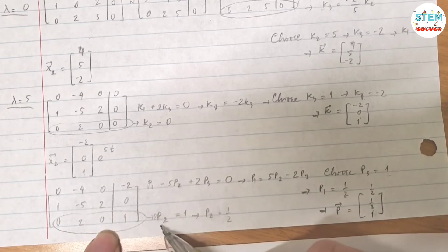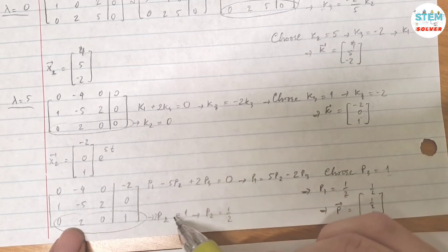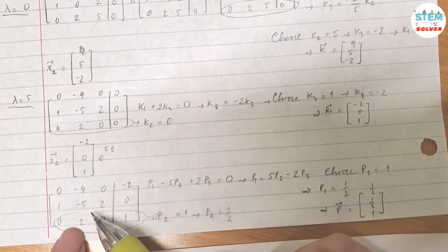So very quickly, I found out that P2 is 1 half, because 2P2 equals 1. Then P2 is just 1 half. Now use the first, second equation.